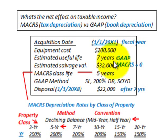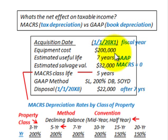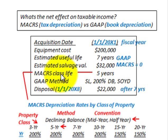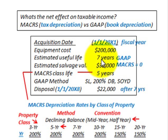For GAAP, the salvage value is $32,000. But for MACRS, the salvage value is always $0 — they depreciate the entire equipment cost down to $0, versus GAAP which only depreciates the cost less its salvage value. MACRS defines a class life of 5 years on this equipment, versus GAAP which uses the estimated useful life of 7 years.